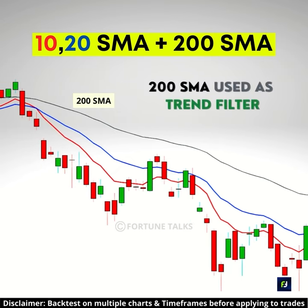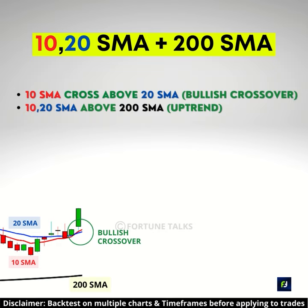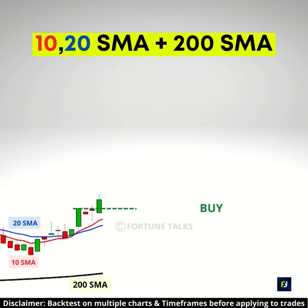To ensure we only trade with the main trend, the 200 SMA can be used as a filter. When the 10 SMA crosses the 20 SMA to the upside, and if the 10 and 20 SMA are above the 200 SMA, we will only look to take long positions by buying above the high of bullish reversal candlesticks.